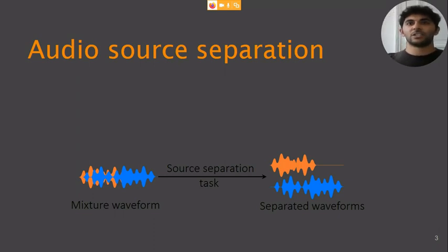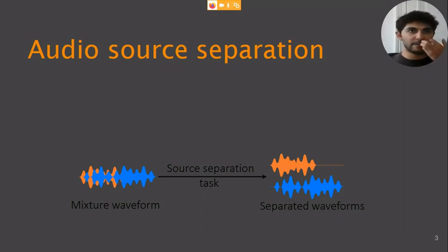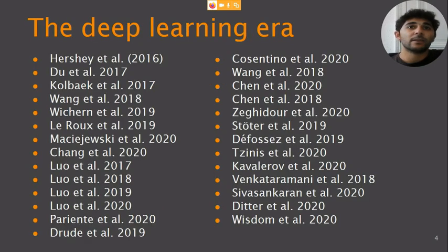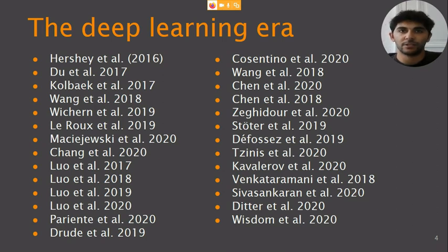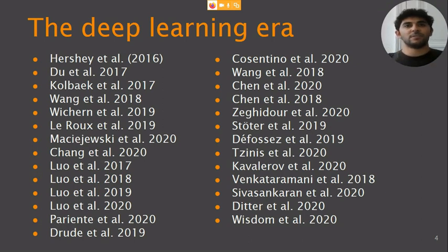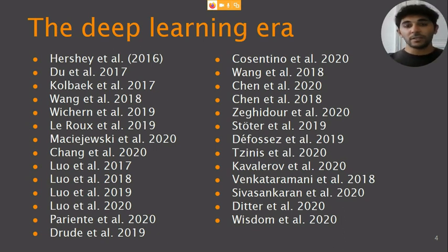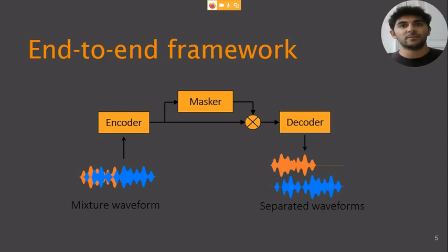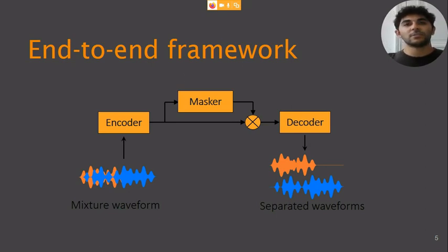Open source toolkits such as FASST, HARK, ManyEars, or OpenBliSSART have been helping with it. In recent years, deep learning approaches have shown to be largely superior, at least in single-channel source separation. This is a hand-picked list of source separation papers since 2016 that all use deep learning, to show that this is a really fast-evolving field. Most of these papers adopt the encoder-masker-decoder approach, which was first introduced in the TasNet paper in 2017. While Asteroid is not limited to that, this is our starting point.